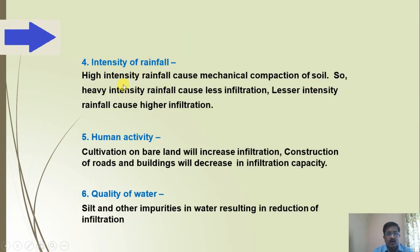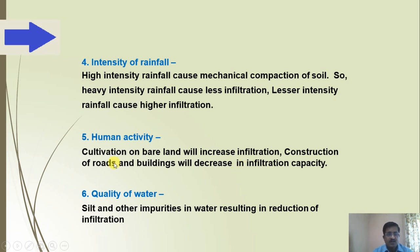Human activity: cultivation on bare land increases infiltration. Construction of roads and buildings decreases infiltration capacity. Generally in cities, infiltration is less — that is why there is depletion of groundwater, where extraction is more but infiltration is less, which is a problem happening in cities.